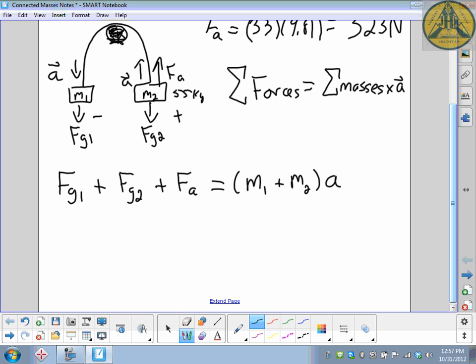That has to equal the two masses that are moving times the acceleration. Remember the 33 kilograms does not get written down as one of the masses. There is no object that is 33 kilograms; that's a reference for how much mass or weight this person can lift.